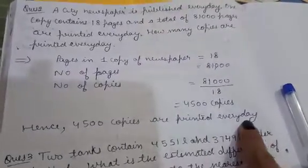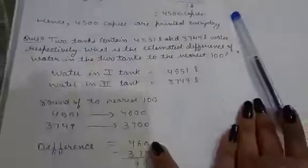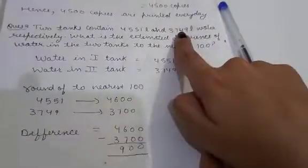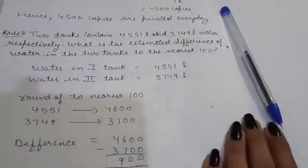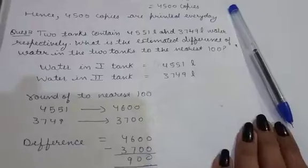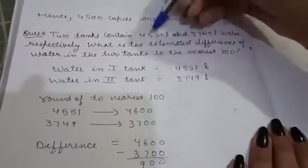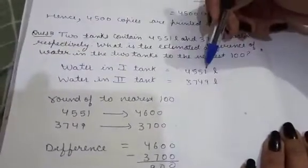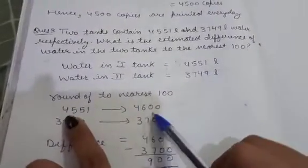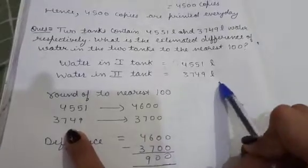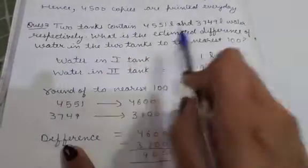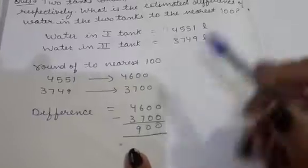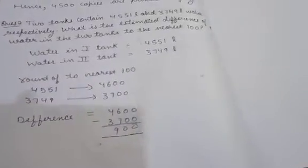Question number three: two tanks contain 4551 liters and 3749 liters of water respectively. What is the estimated difference of water in the two tanks, rounded to the nearest hundred? Rounding 4551 to the nearest hundred gives 4600; rounding 3749 gives 3700. The difference is 4600 minus 3700, which equals 900. So the estimated difference is 900 liters. Chapter one is now completed.